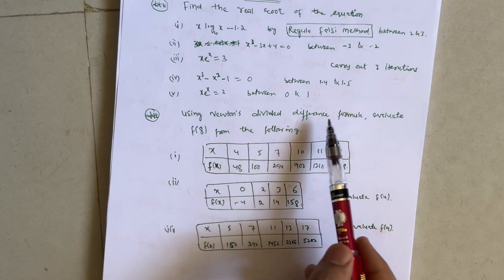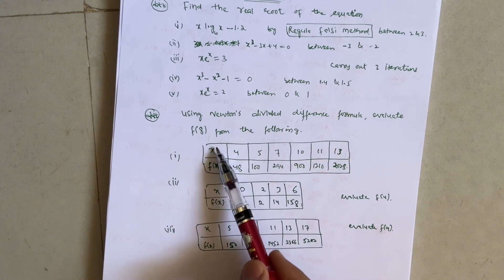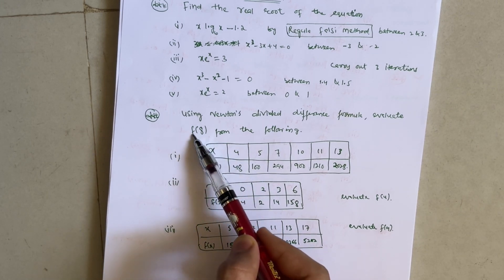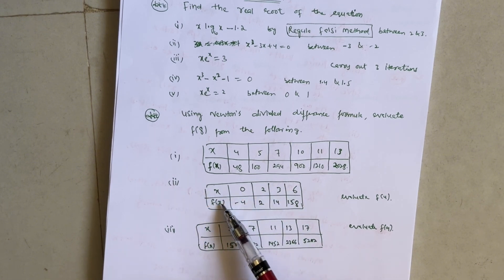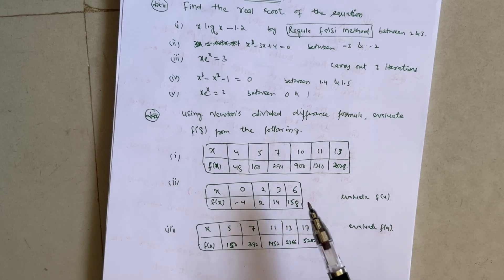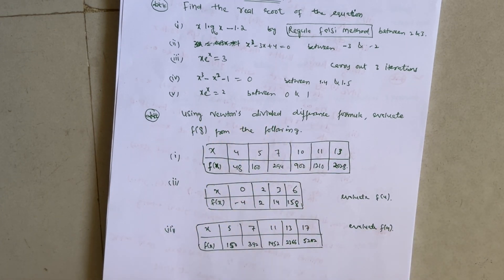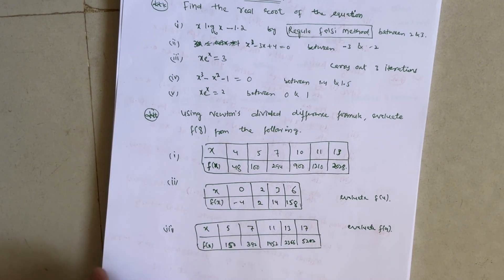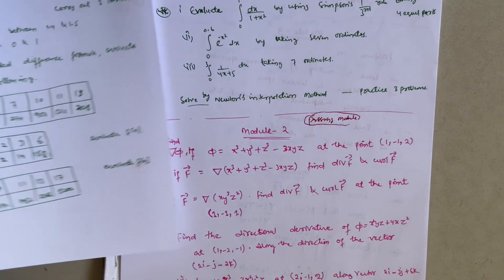Next, Newton's Divided Difference formula: evaluate f(8) from a given table of x and f(x) values. Additional problems require evaluating f(4) and f(9) from given tables. Make sure you practice these problems. Previous question papers and model papers will be uploaded on my Instagram account, and the link will be available in the description box.